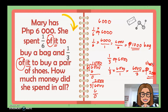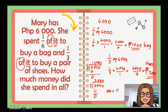So she spent one thousand pesos for the bag and two thousand pesos for the shoes. But the question is how much money did she spend in all? So there is addition as another operation in the problem. We add one thousand plus two thousand, and the answer is Mary spent three thousand pesos in all.